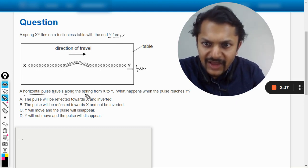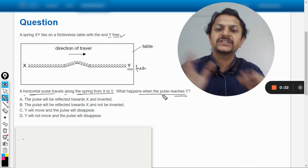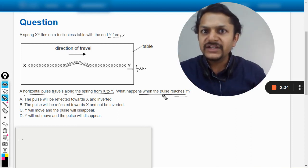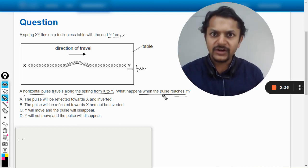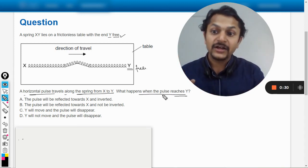What happens when the pulse reaches Y? So obviously energy will not be lost anywhere. Energy will be conserved and that energy will be reflected back. So there will be a definite reflection in this wave.